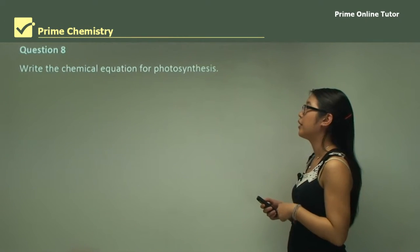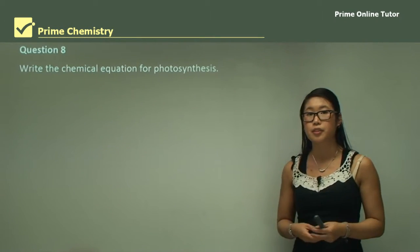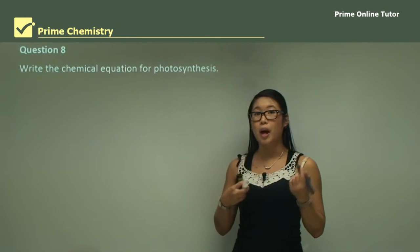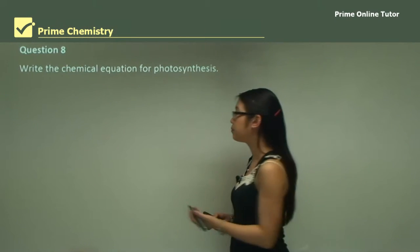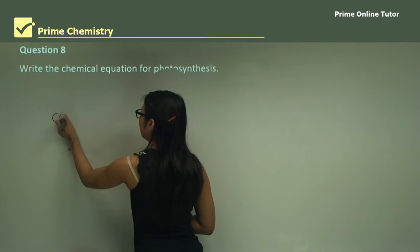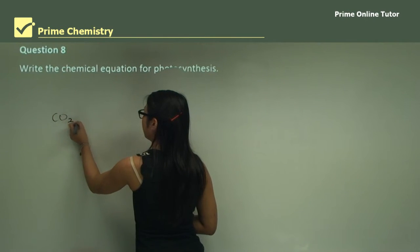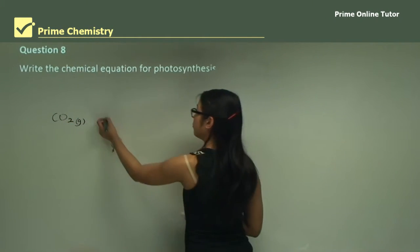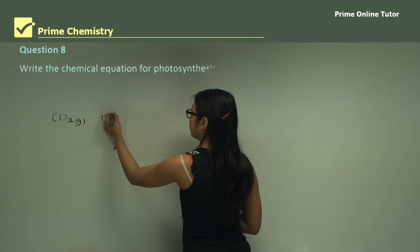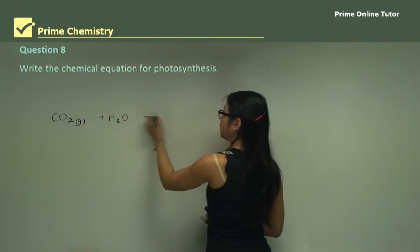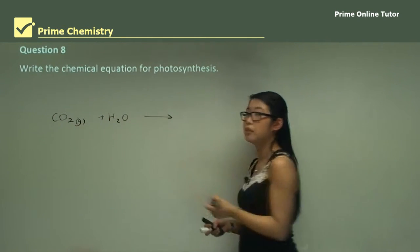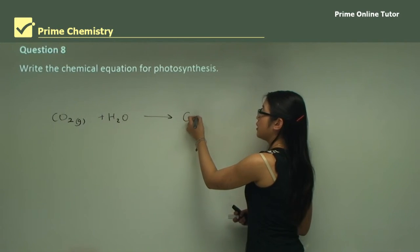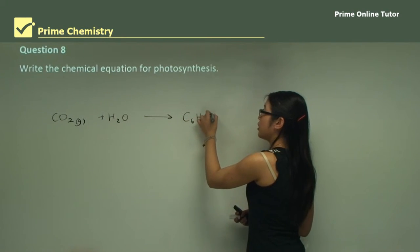Question eight: write the chemical equation for photosynthesis. Photosynthesis uses carbon dioxide and water to produce glucose — remember glucose is C6H12O6 — and it also produces oxygen.